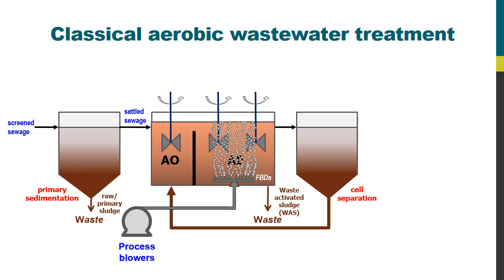So in effect, regular classical aerobic wastewater treatment is a two-stage process: the primary treatment, which is just a sedimentation process, and the secondary treatment, which is the biological tank followed by the cell separation stage, referred to collectively as the activated sludge process. Most wastewater treatment plants just comprise those two processes, maybe with a few added whistles and bells here and there.